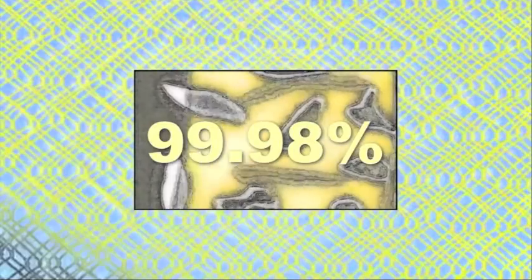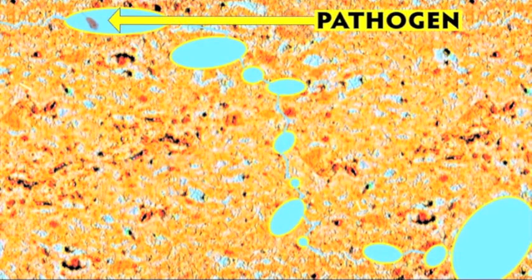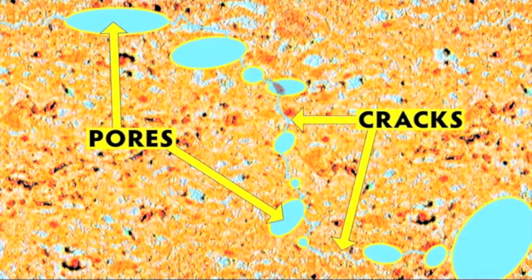It's like electrifying the chain-link fence and brings the filter's bacteriological effectiveness to 99.98%. So the filter uses three mechanisms to trap and kill pathogens: the size of the pores, the fine jagged cracks between them, and the silver lining which kills the bacteria before they can get through the wall.